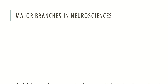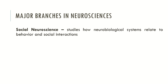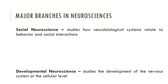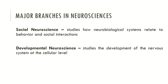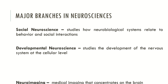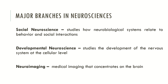Social Neurosciences studies how neurobiological systems relate to behavior and social interactions. Developmental Neurosciences studies the development of the nervous system at the cellular level. Neuroimaging is a form of medical imaging that concentrates on the brain.